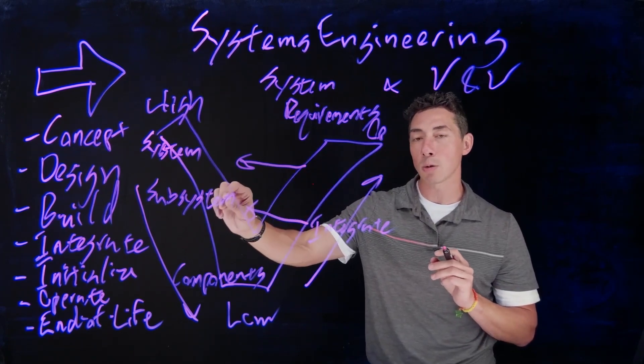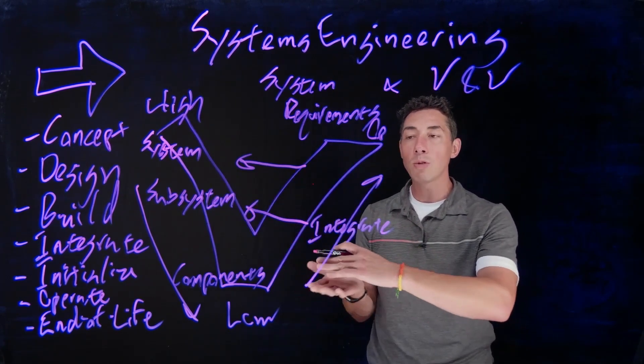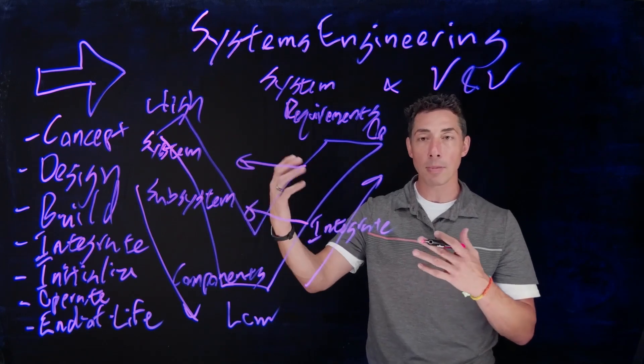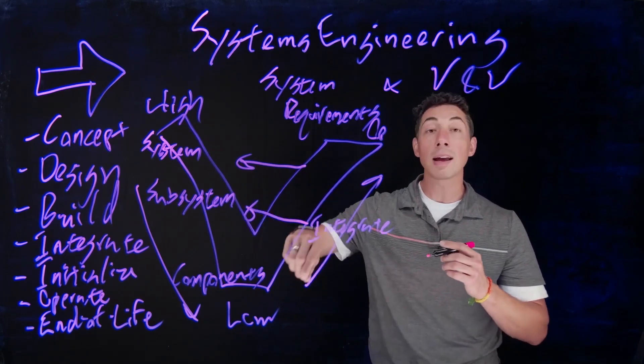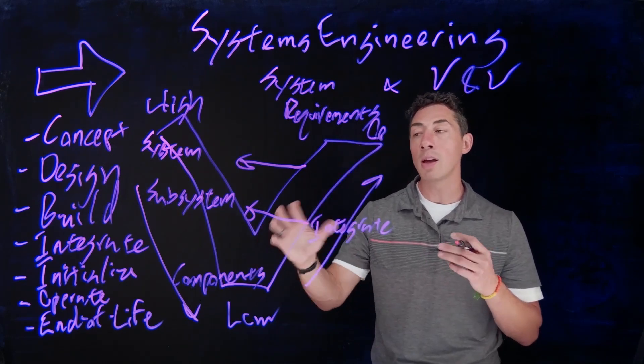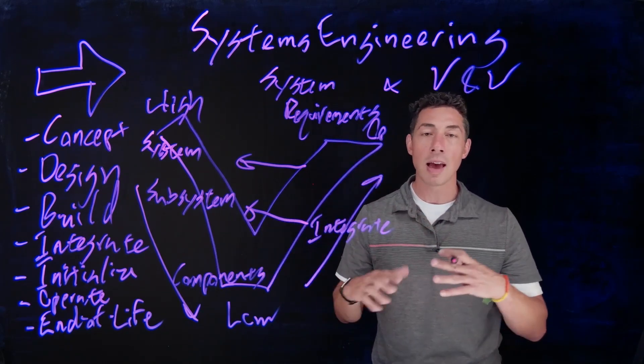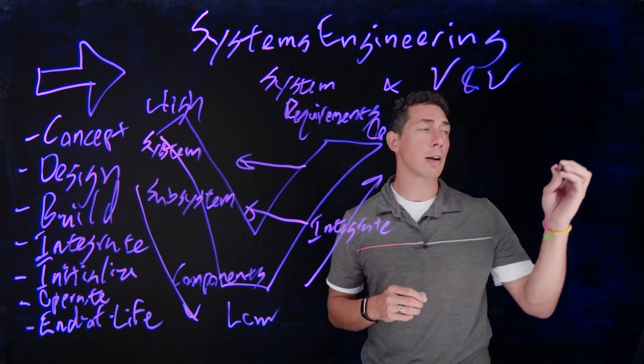And as you do that, you're going to use your testing to validate and verify that each of those system requirements are met, that each of those subsystem requirements are met. So as you're moving back up the V on the other side, you're verifying that, yep, all those validation and verifications say that it works the way it's supposed to, and I can move on to the next step. And if they don't, you can then rebalance things. And that's the role of a good system engineer or a good systems integrator.